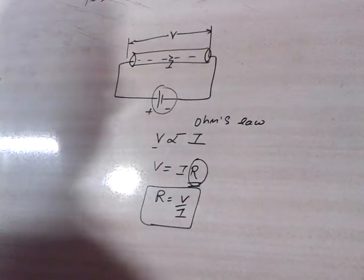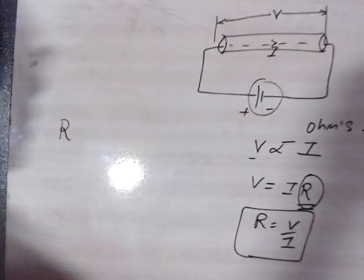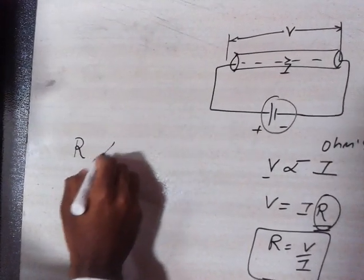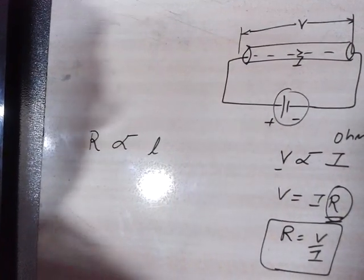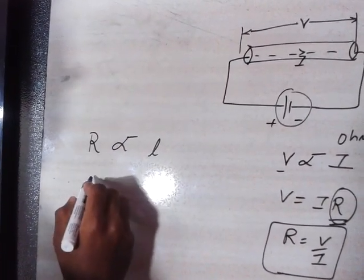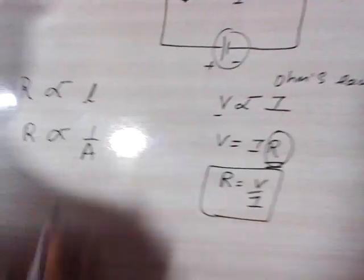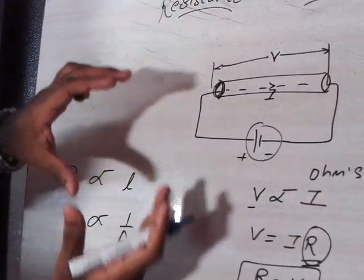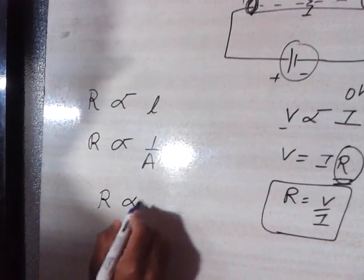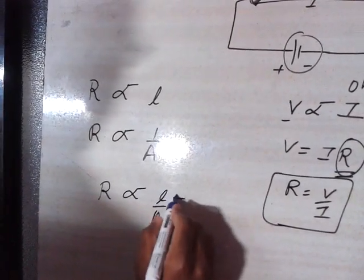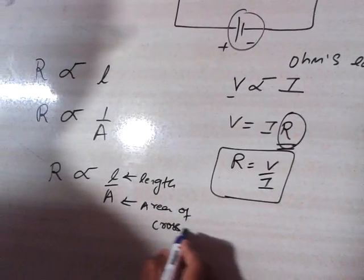Now let's look at what resistivity means. For that, I need to explain what resistance depends upon. First, resistance is directly proportional to the length of the wire — as we increase the length, the resistance increases, meaning the current has more resistance to overcome. Second, resistance is inversely proportional to the area of cross-section — as the area increases, the resistance decreases. Together: resistance is proportional to L upon A, where L is the length and A is the area of cross-section.